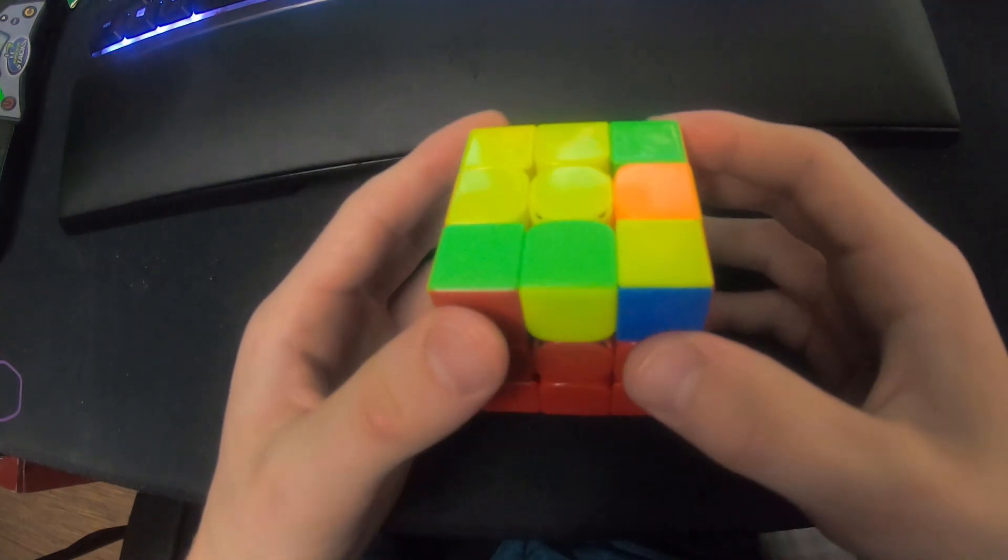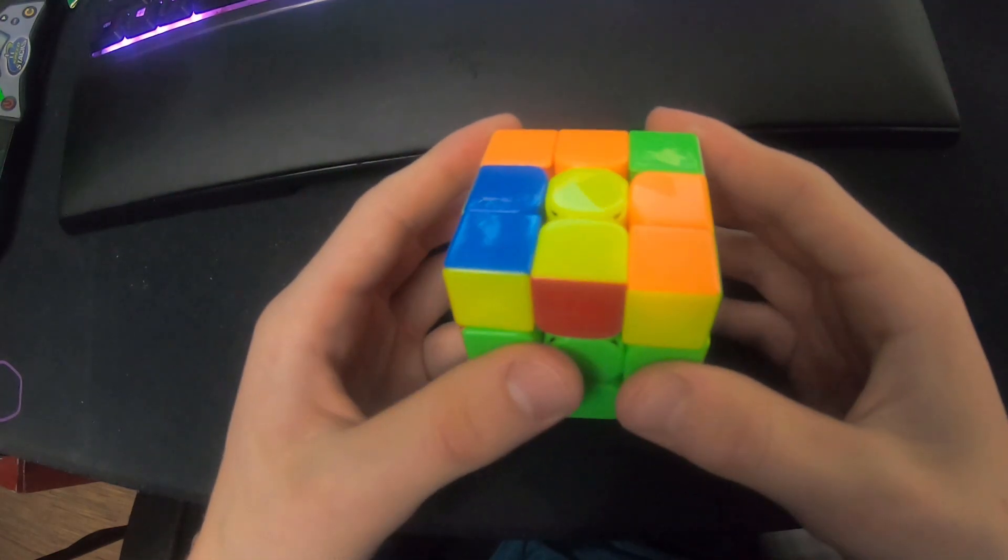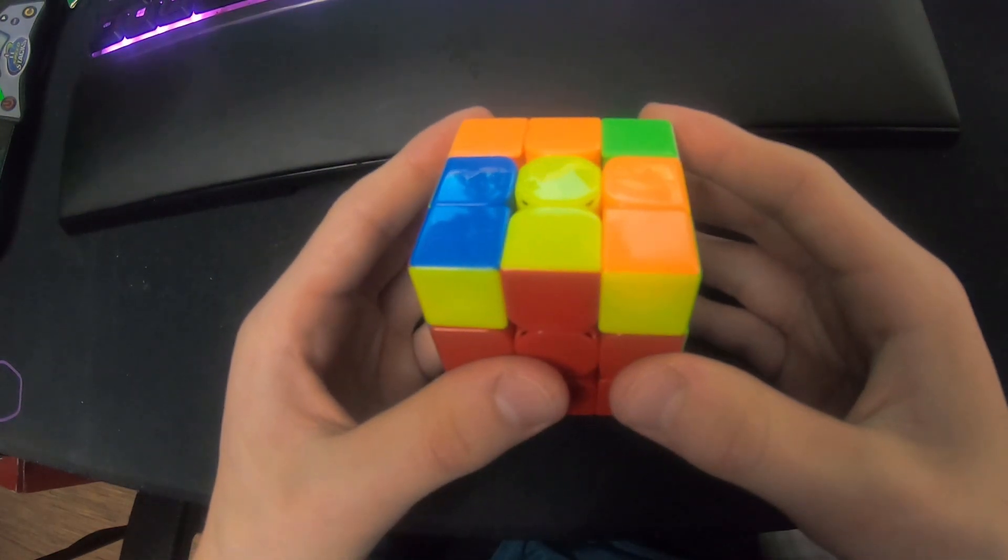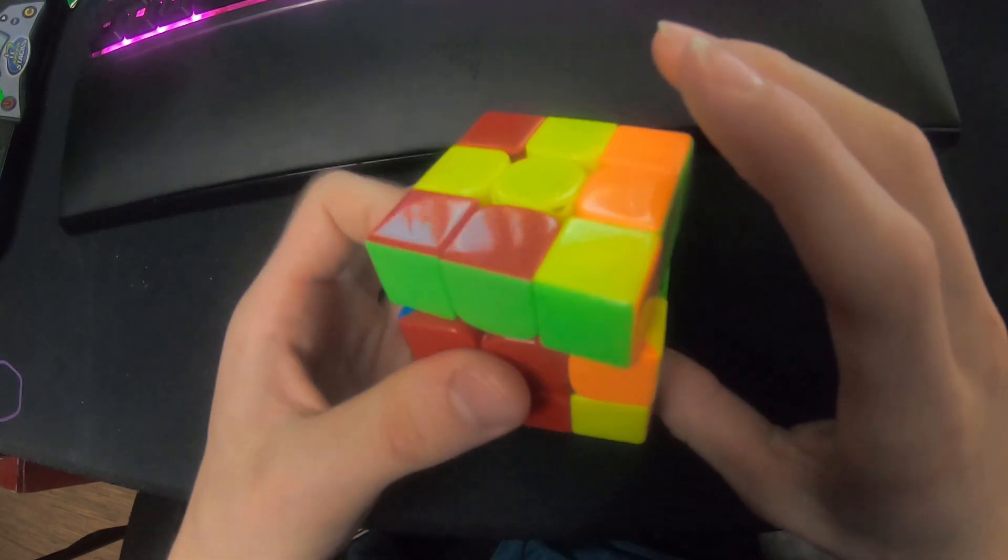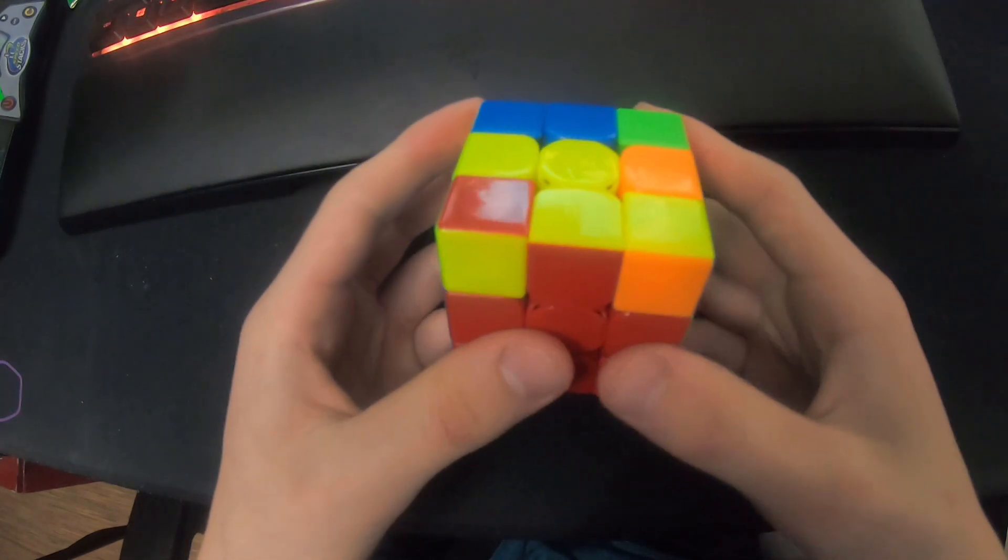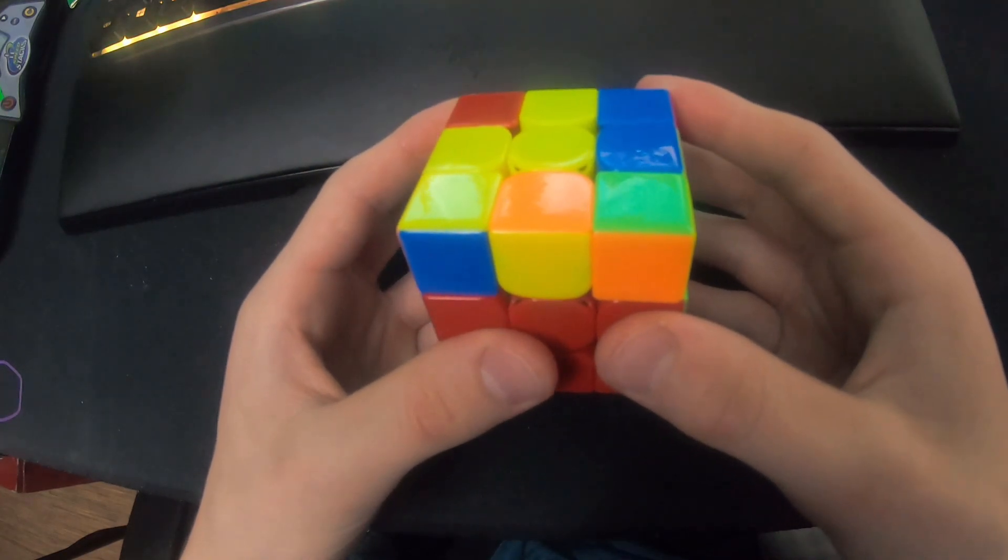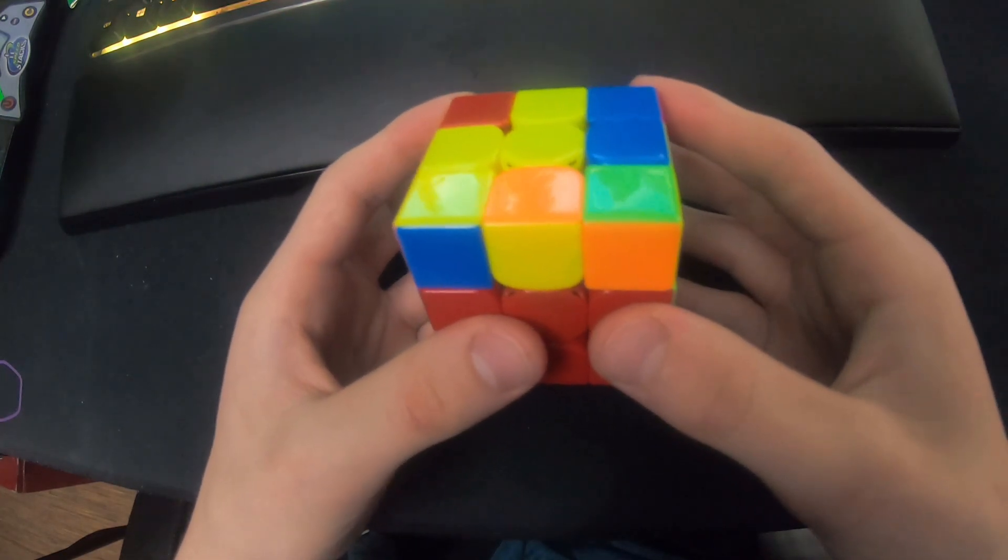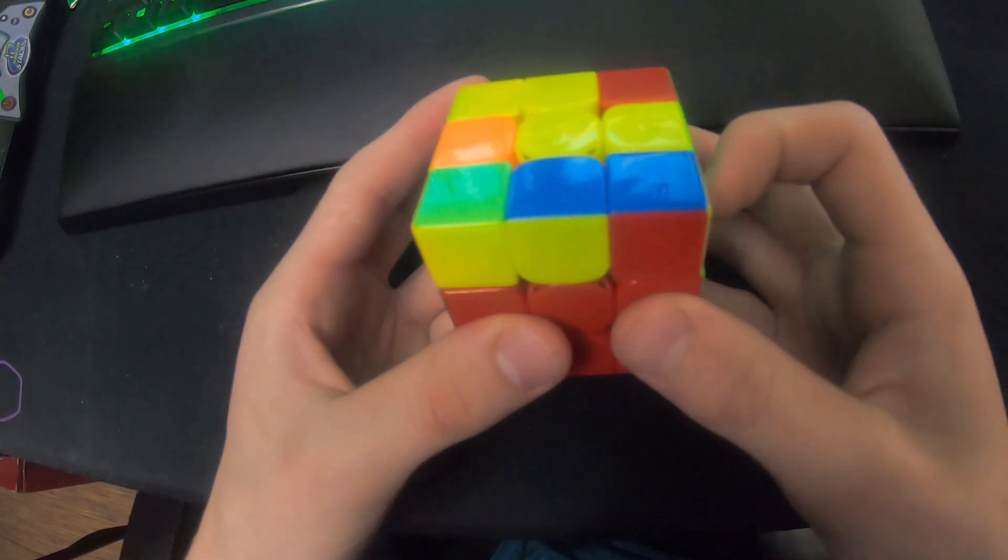I did the D again and left U2 there and solved it like this, just trying to keep the flow as good as possible. I never rotated or went away from home grip, and went straight into last layer just trying to maximize the TPS here.